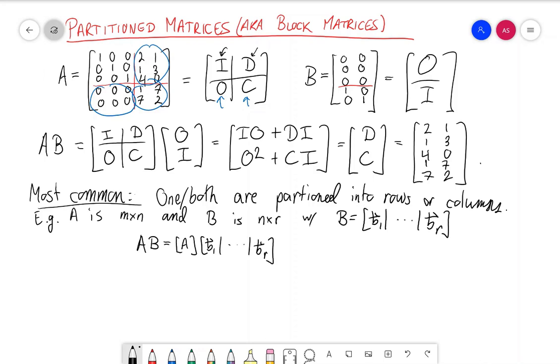And then using what I just talked about, we pretend these are matrices of numbers and keep track of the order. And we get [AB1...ABr].